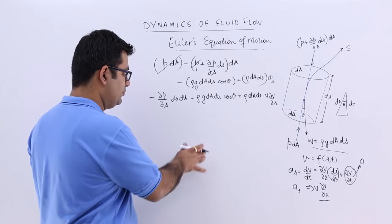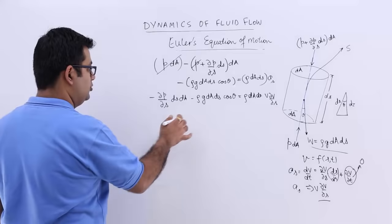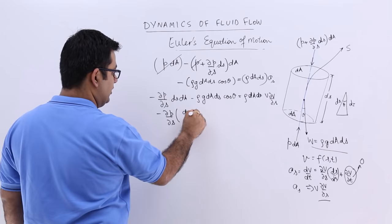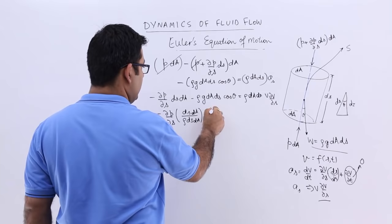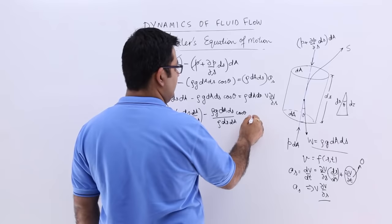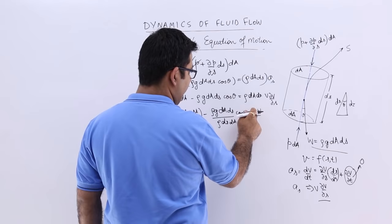Now let us divide the entire equation by rho dA ds. So you will get minus curly p upon curly s ds dA upon rho ds dA minus rho g dA ds upon rho ds dA, and this has cos theta. This will be equal to, this will get cancelled and you will have V into curly V upon curly s.